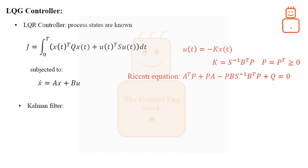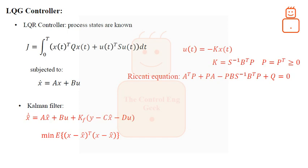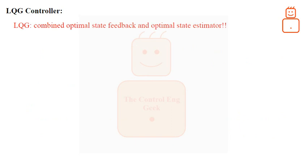Now let us show the equations involved in the Kalman filter computations. The Kalman filter has the structure of an ordinary state estimator or observer with dynamics given as shown. The optimal gain of the Kalman filter Kf minimizes the expected value of the quadratic difference between the state and its estimate. This gain is given as shown. The matrix Y, analogous to the gain matrix P, is the solution of the following Riccati-like equation. The combined optimal state estimation and optimal state feedback is simply the LQG problem.